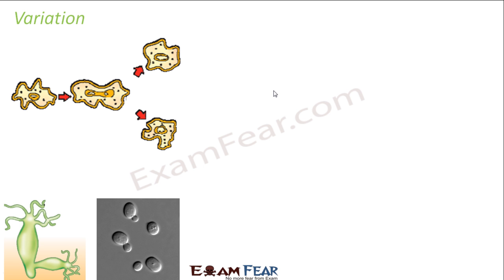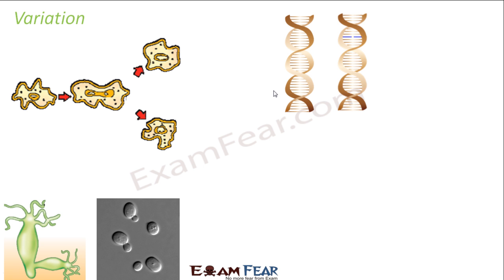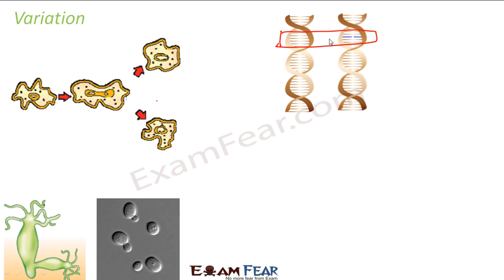In asexual reproduction, the amount of variation is comparatively lesser than in sexual reproduction. The parent DNA gets copied into the daughter DNA, but during copying there might be some small errors. These are nothing but changes in the sequence of nucleotides. During copying, sometimes the sequence might get altered, and those small changes can cause some minor differences in the new organism. But those small variations which happen can later on give rise to more variations.